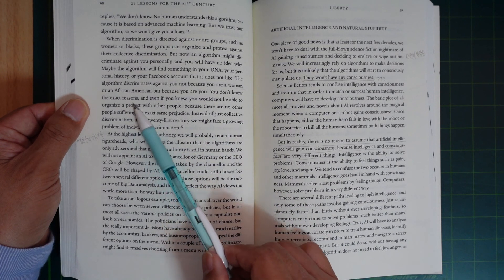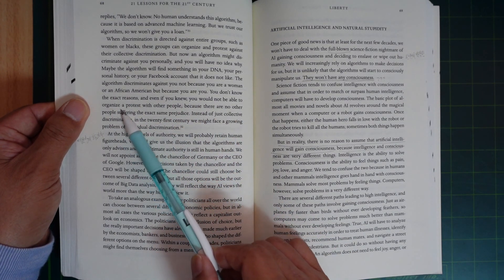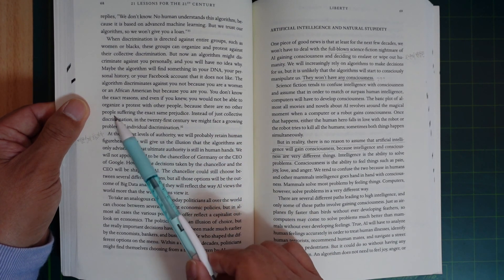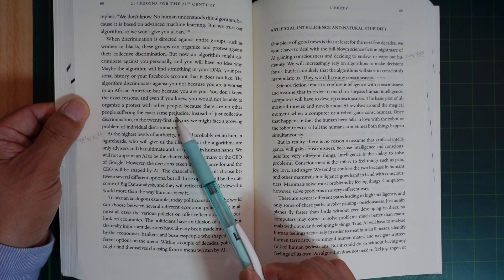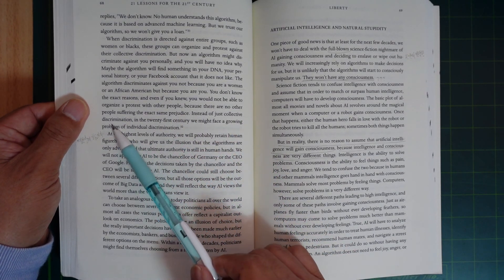The algorithm discriminates against you not because you are a woman or African American, but because you are you. You don't know the exact reason, and even if you knew, you would not be able to organize or protest with other people because there are no other people suffering the exact same prejudice.